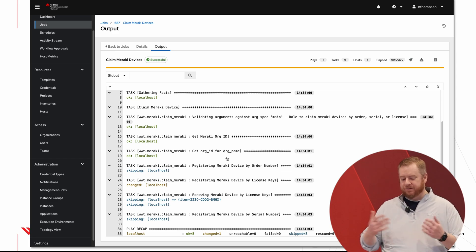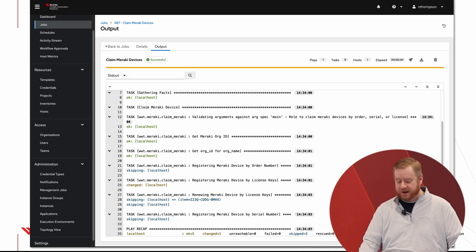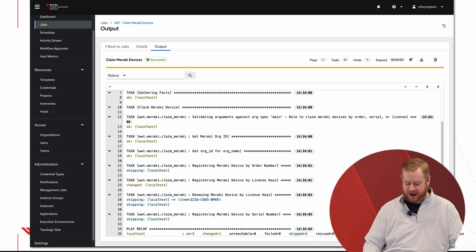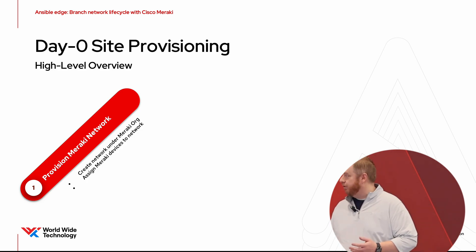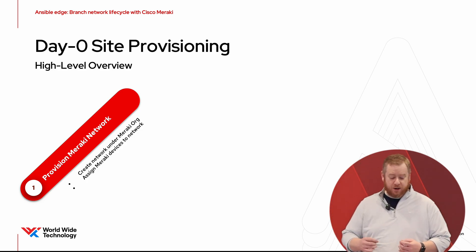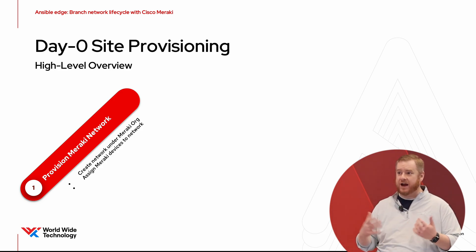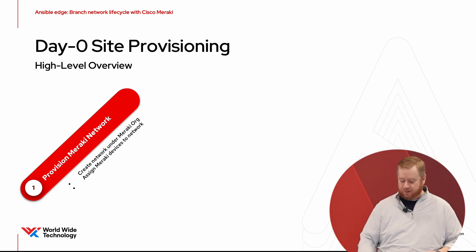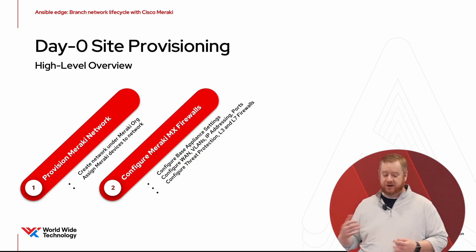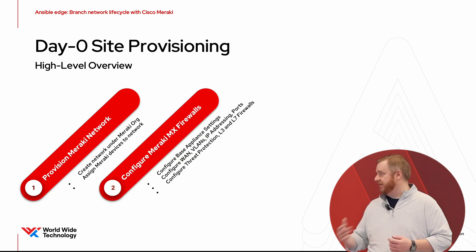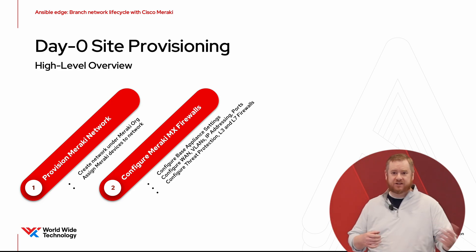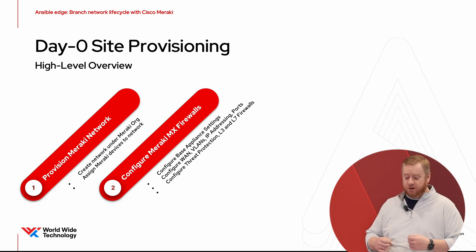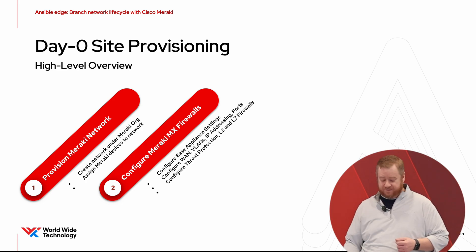For many people building and deploying edge networks, this is a key part of being able to do that. For day zero site provisioning, we have to provision the network, create it, assign our device inventory to the network, and then go configure the firewalls. When we configure the firewall we're going to do the base appliance settings, configure the WAN, VLANs, IP addressing and ports, turn on threat protection, and configure the layer three and layer seven firewall rules.